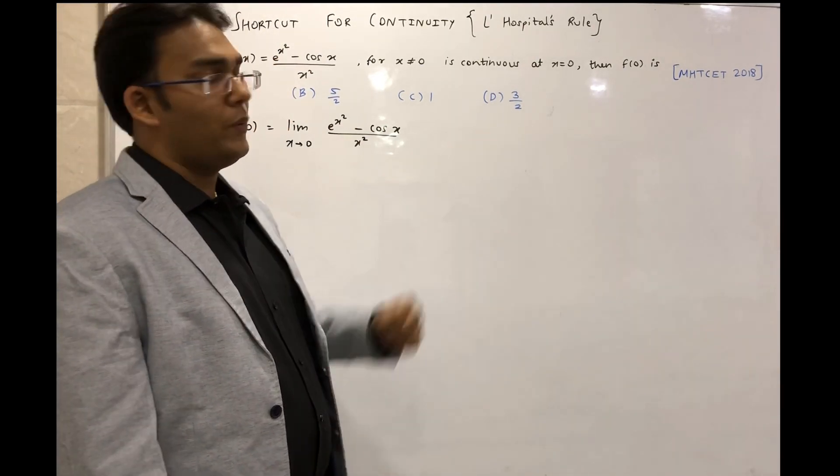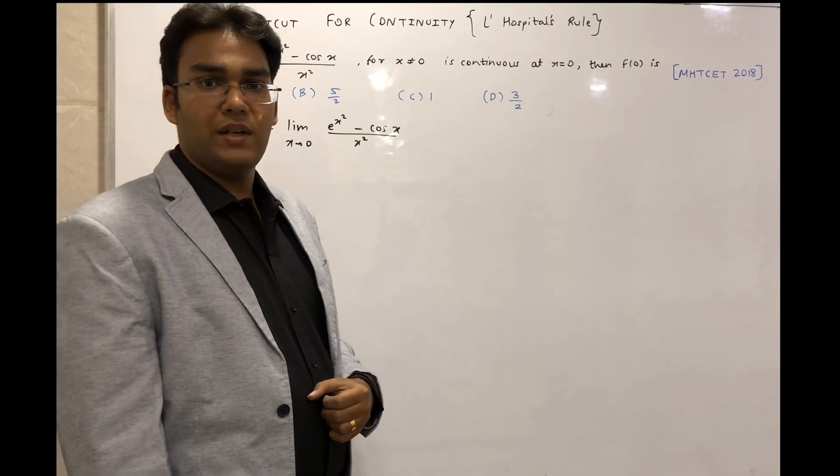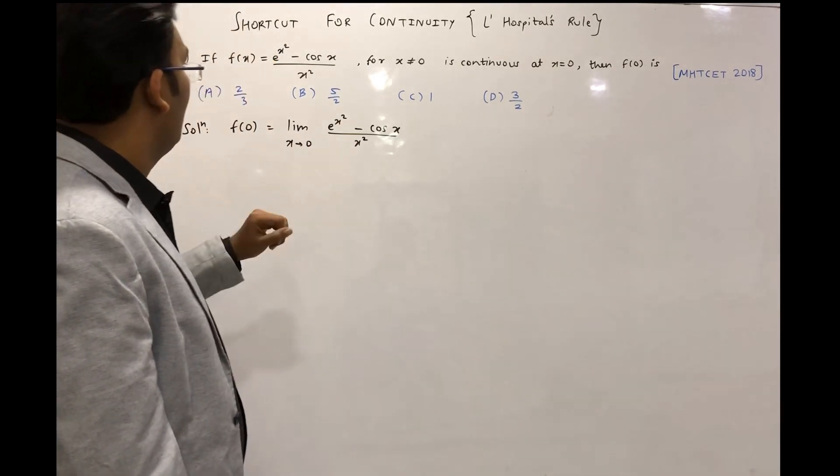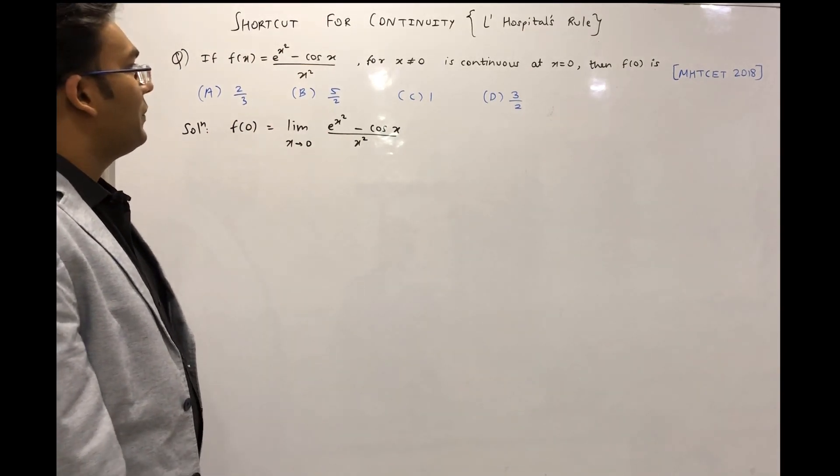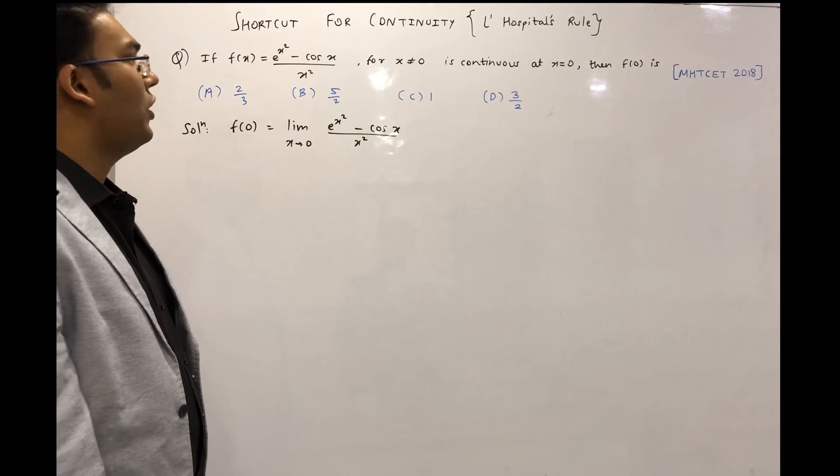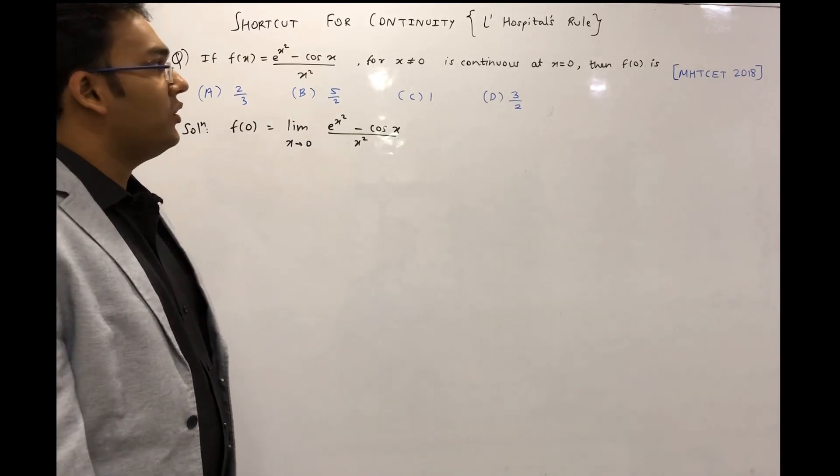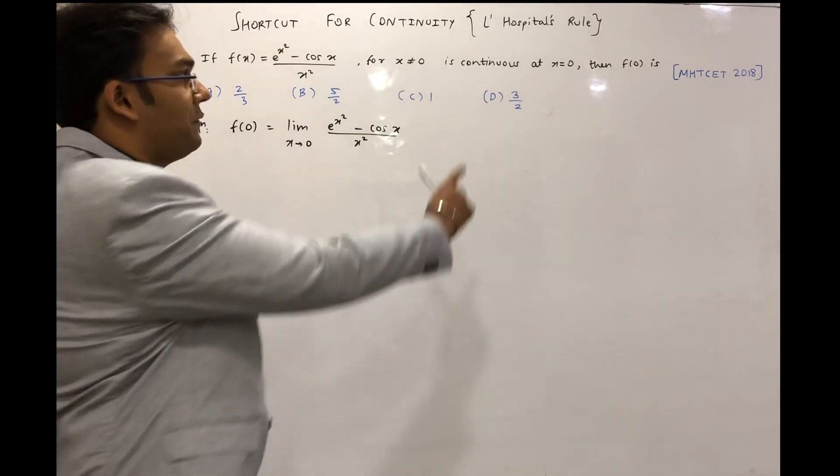So I have taken a question from MHTCET 2018 and the question is: if f(x) = (e^(x²) - cos x) / x² for x ≠ 0 is continuous at x = 0, then find f(0).